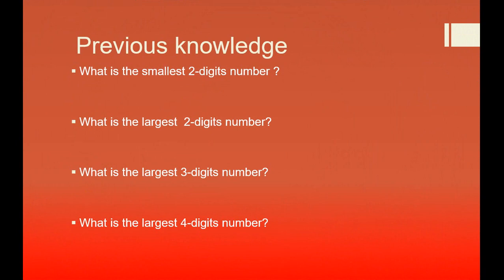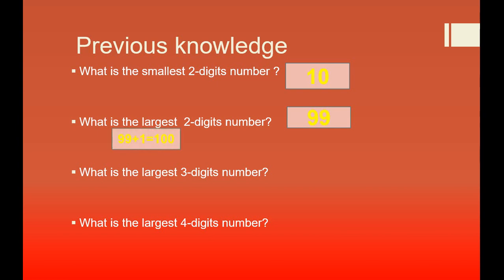Dear students, first of all we will recall the main points of the previous lesson. What is the smallest 2-digit number? Can you tell me? Yes, that is 10. Dear students, can you tell me what is the largest 2-digit number? That is 99. Very good. Dear students, if we add 1 to 99, then we have 100, and that 100 has 3 digits. It means we can say 100 is the smallest 3-digit number.